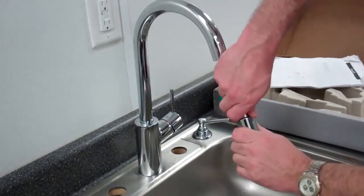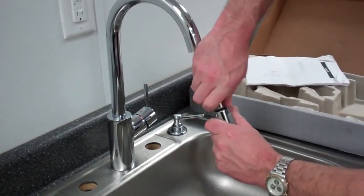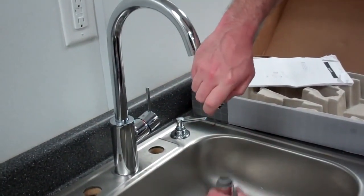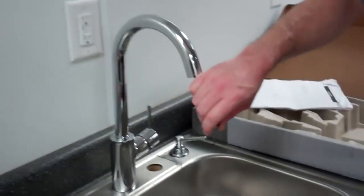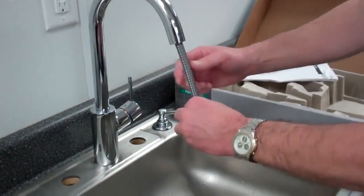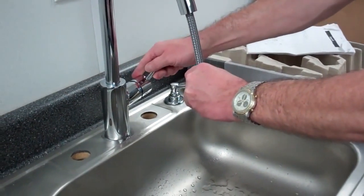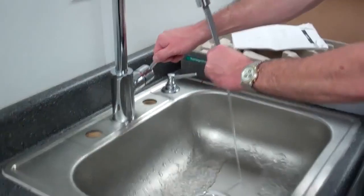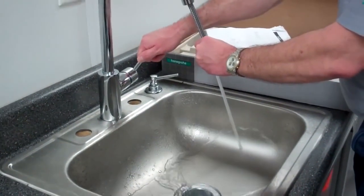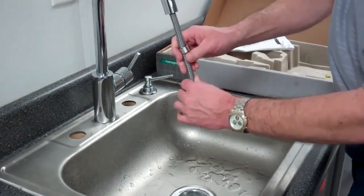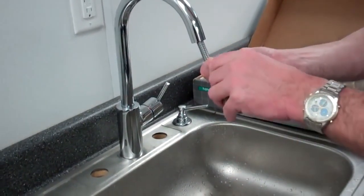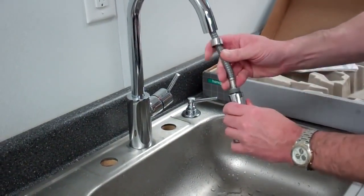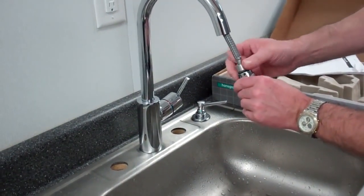Before I actually turn on the faucet, I like to take the hand sprayer off and make sure I have the filter screen in. Just to make sure any loose debris that might have been in the service stops or in the supply lines doesn't get washed up into my faucet.